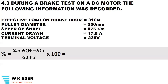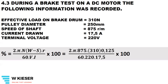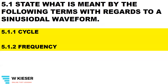For the direct method efficiency test, the formula is 2 times pi times the speed, multiplied by the effective force, multiplied by the radius, divided by 60, the supply voltage, and the supply current. When we substitute all those values into the equation, we end up with an efficiency of 92.2%.